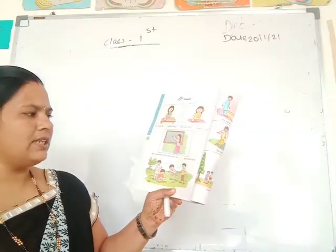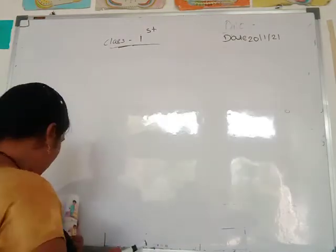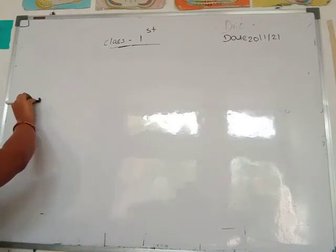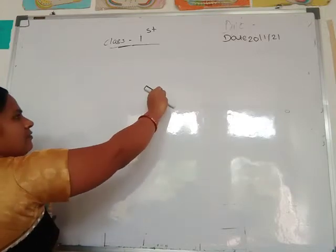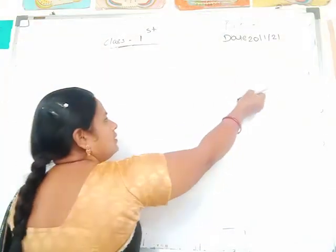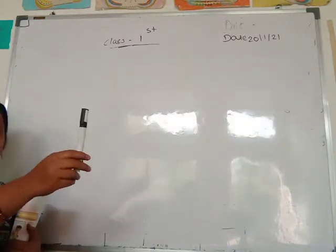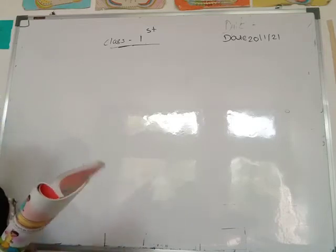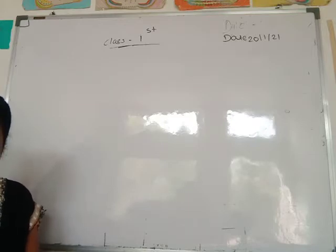Then my classroom blackboard — how many pencils long? You take pencils and you measure the classroom blackboard using pencils in this way: 1, 2, 3, 4, 5, 6, and 7. So this blackboard is 7 pencils long. You do this activity at home — measure your blackboard or table using a pencil and see how many pencils long it is.